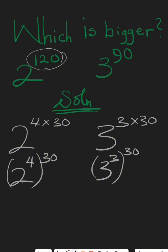So what we do, we simplify the parenthesis or the brackets. 2 raised to the power of 4 will give you 2 times 2 times 2 times 2 in 4 places, which will give you 16 raised to the power of 30. And 3 raised to the power of 3 means 3 times 3 times 3 in 3 places, gives you 27 raised to the power of 30.